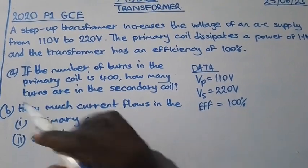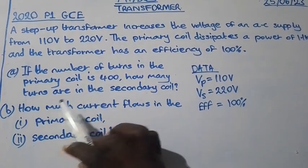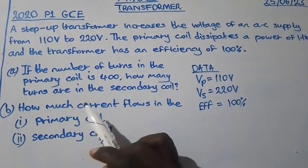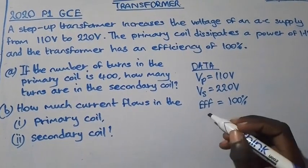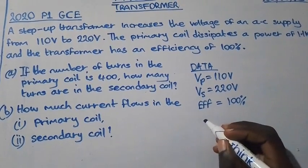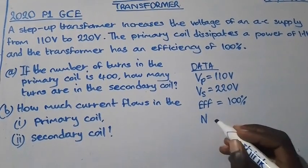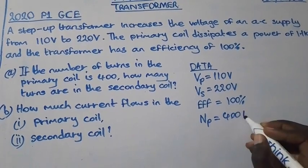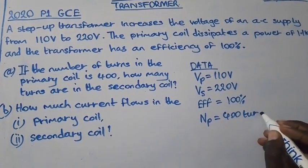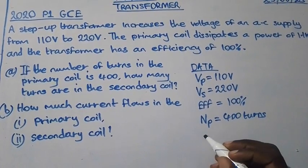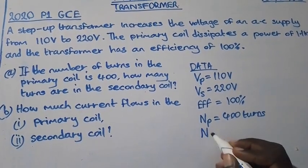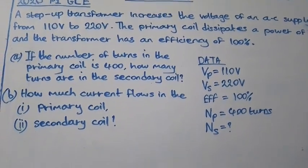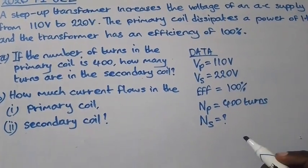Part A: If the number of turns in the primary coil is 400, how many turns are in the secondary coil? So if we have NP equal to 400 turns, what is NS, the number of turns in the secondary coil?